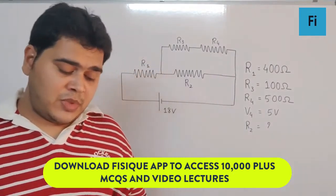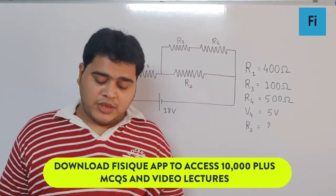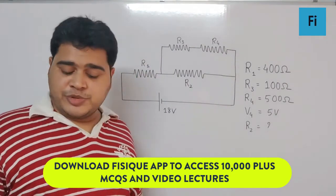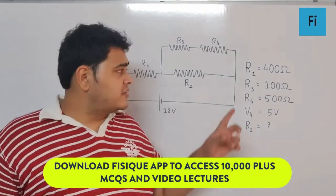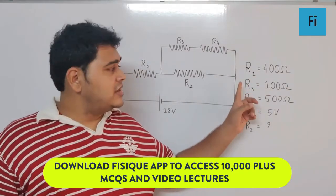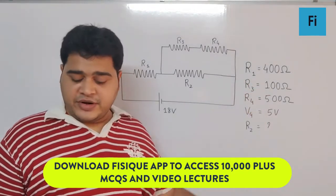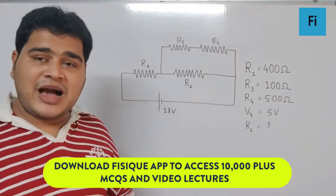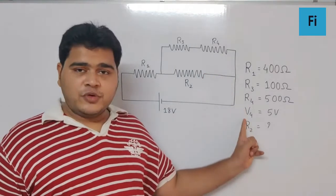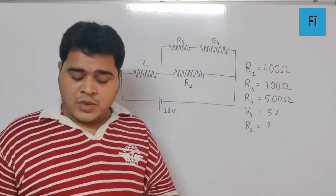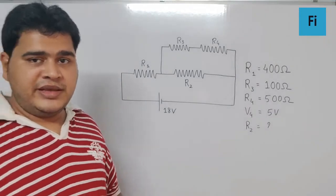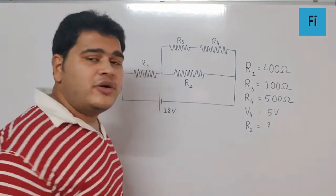Guys, the question says, in the given circuit, the internal resistance of the 18V cell is negligible. If R1 is 400Ω, R3 is 100Ω, and R4 is 500Ω, and the reading of an ideal voltmeter across R4, let us denote it as V4, is 5V, then the value of R2 will be... yes guys, we are supposed to find the value of R2.